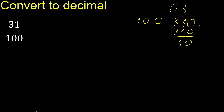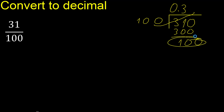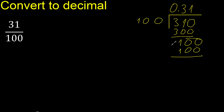10 — there is no number that goes down, therefore complete with 0. 100 multiplied by which number is nearest to 100. Multiply by 1 is 100. Subtract — 0. Therefore finish.